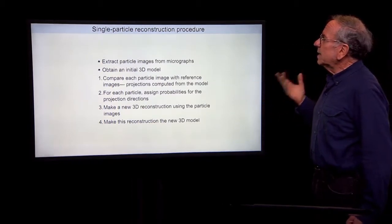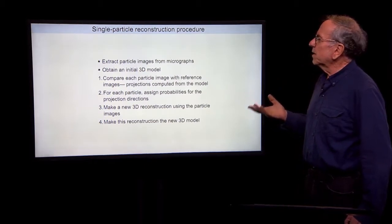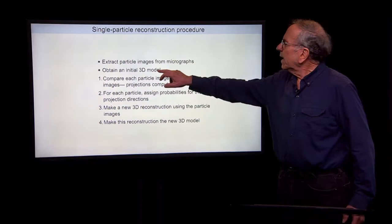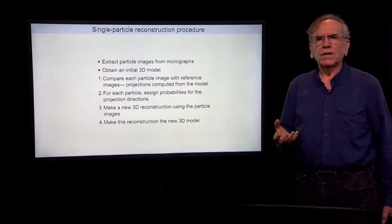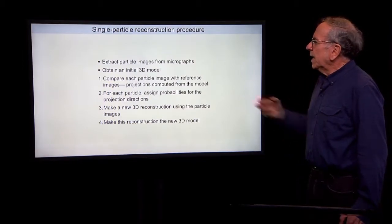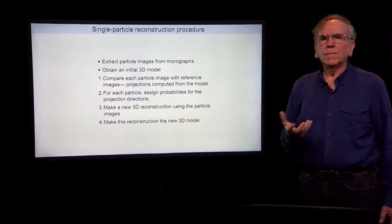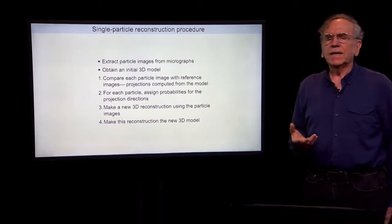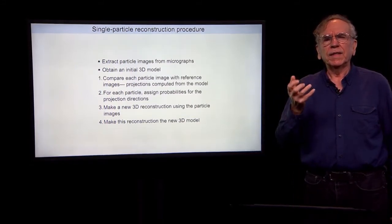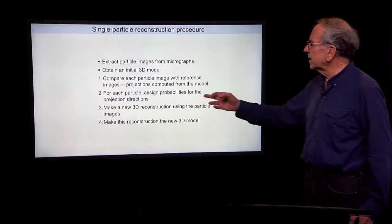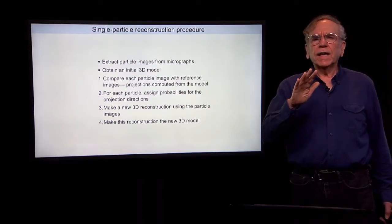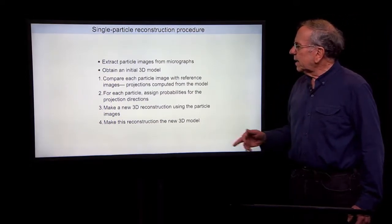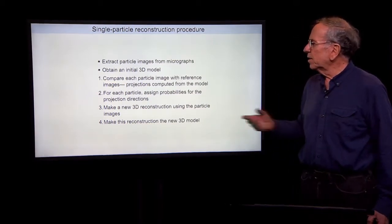So we can see then, schematically at least, how the single particle reconstruction procedure might work. We first take our micrographs and extract those little particle images from them. And we somehow obtain an initial three-dimensional model of our particle's density. And then we compare each particle image with reference images, which are projections computed from the model. And in the process of those comparisons, we assign probabilities to the projection directions that we think the particle may have based on the information in the image. And then we use that orientation information to then insert slices into a three-dimensional Fourier volume.